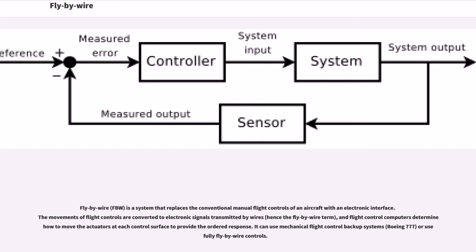Fly-by-Wire (FBW) is a system that replaces the conventional manual flight controls of an aircraft with an electronic interface. The movements of flight controls are converted to electronic signals transmitted by wires, hence the fly-by-wire term, and flight control computers determine how to move the actuators at each control surface to provide the ordered response.